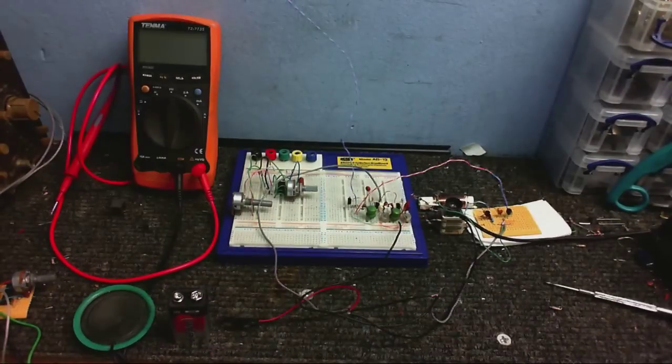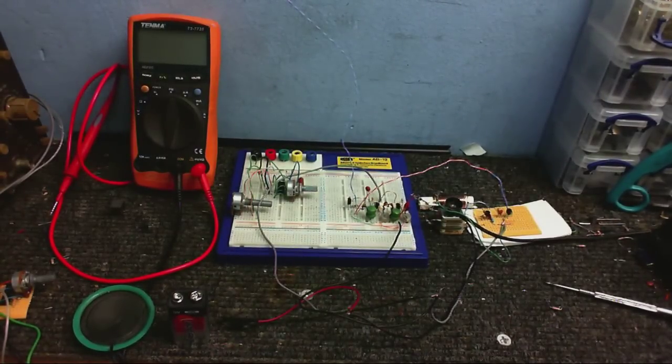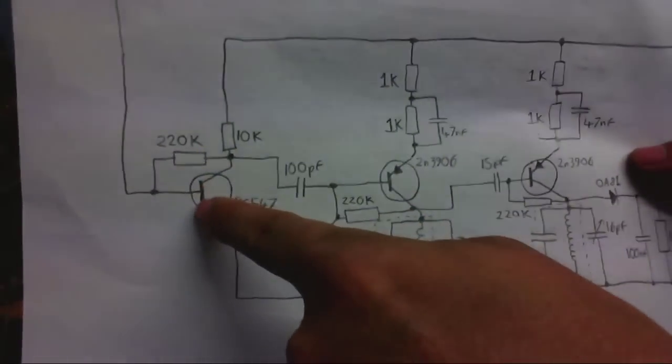So anyway, I've been experimenting with trying to build a SUPERHET RADIO, a very simple one that doesn't actually have an antenna coil but should still be able to receive something. This is the circuit, as you can see, we've got an RF amplifier stage here.